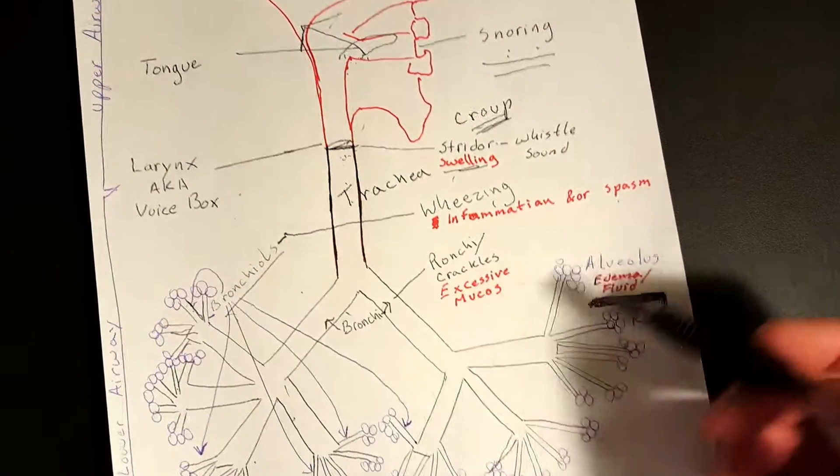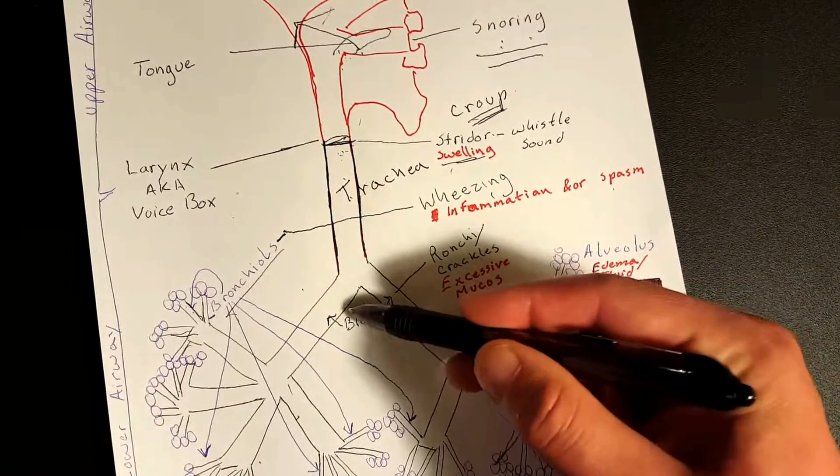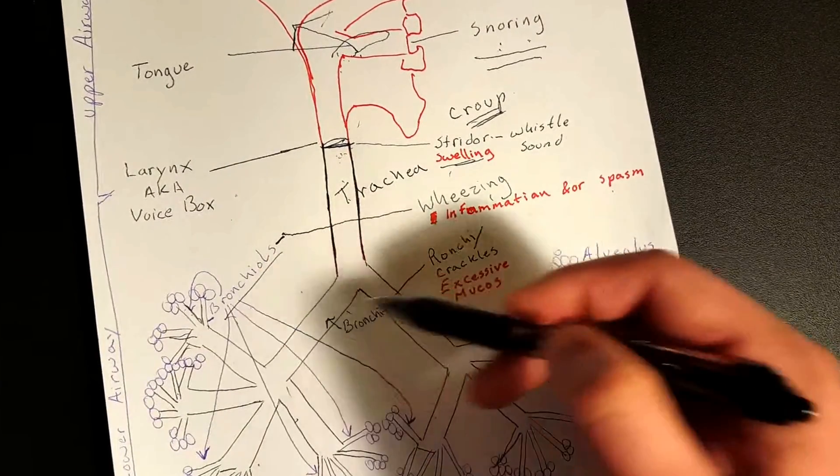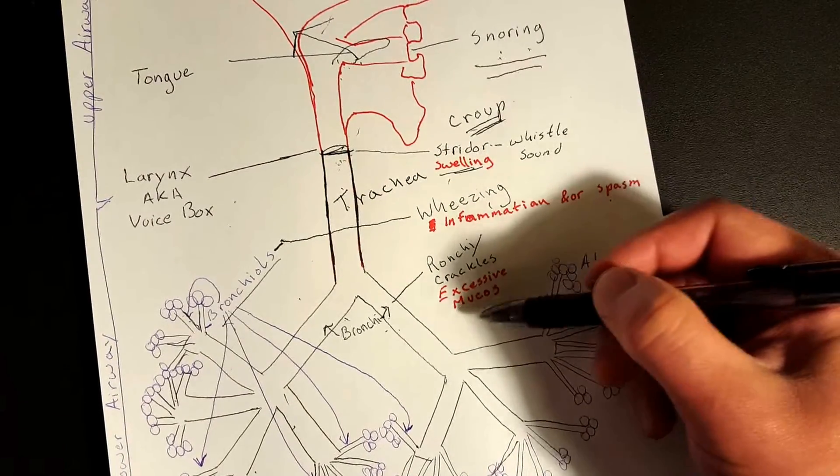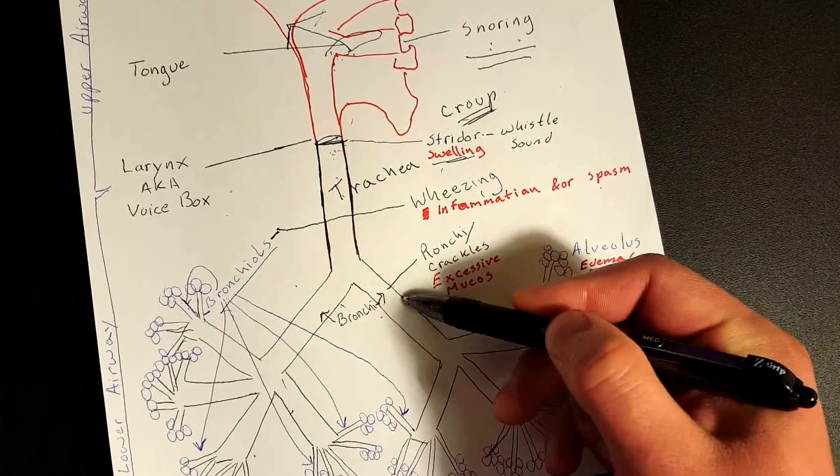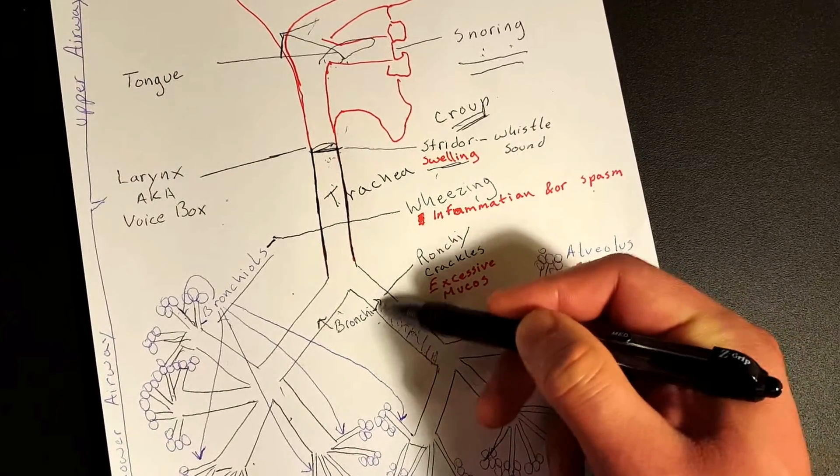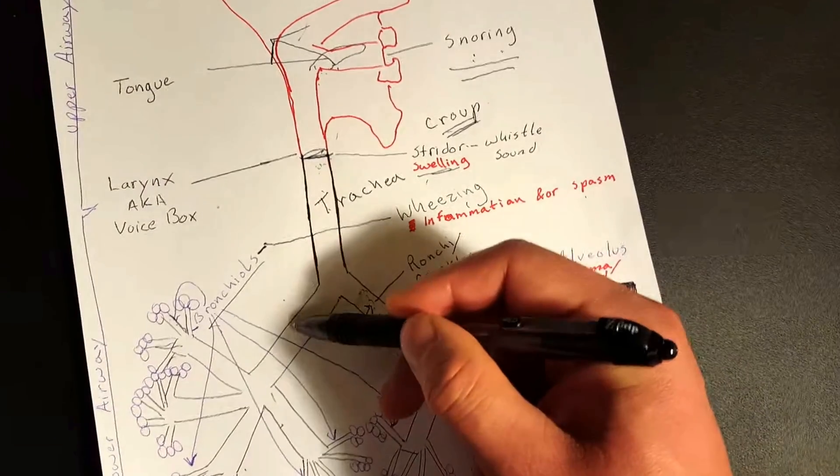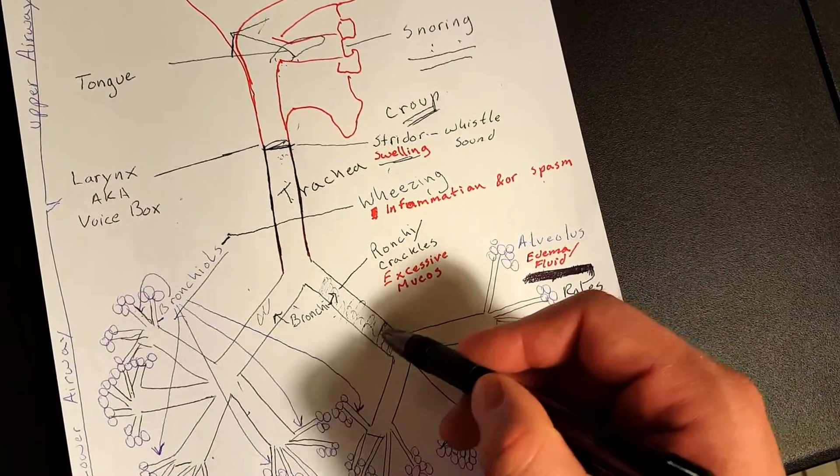All right, now these are your bronchi - big bronc, big tube. So bronchioles are the small tubes, bronchi are the big tubes. If you have ronchi or crackles, usually it's caused from excessive mucus. You have way too much mucus that's building up inside here in the bigger part of your lower airway, the bronchi, and that's causing that ronchi kind of crackling noise. So that's what's going on there.